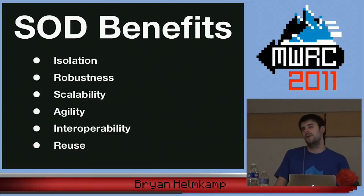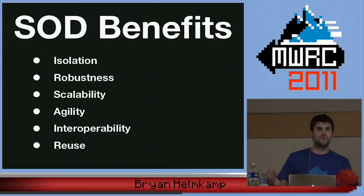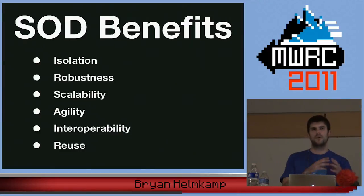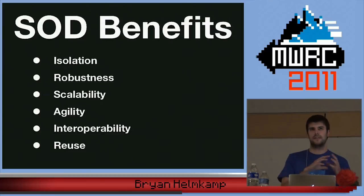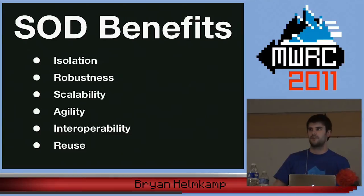Agility is an interesting one. A lot of people don't think of service-oriented architecture as increasing agility. But for example, in upgrading our Ruby VMs to Ruby 1.9, we were able to do it in smaller increments, getting code out on 1.9 faster and making the entire transition less daunting.